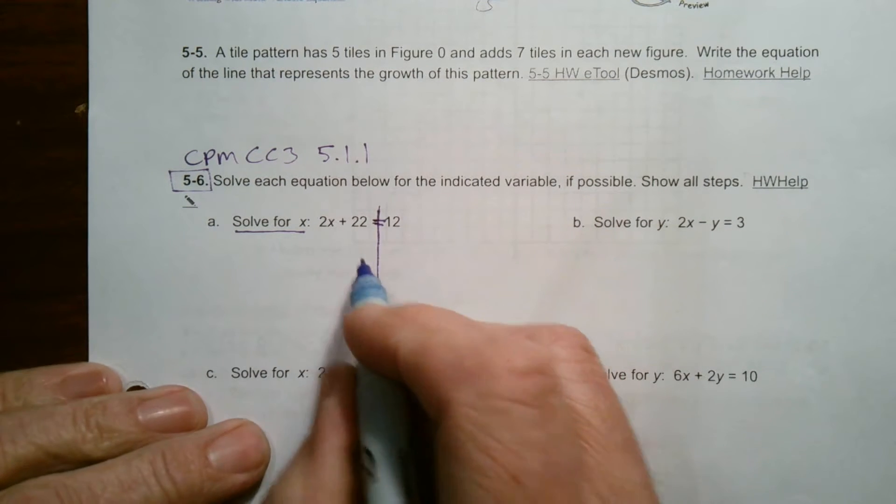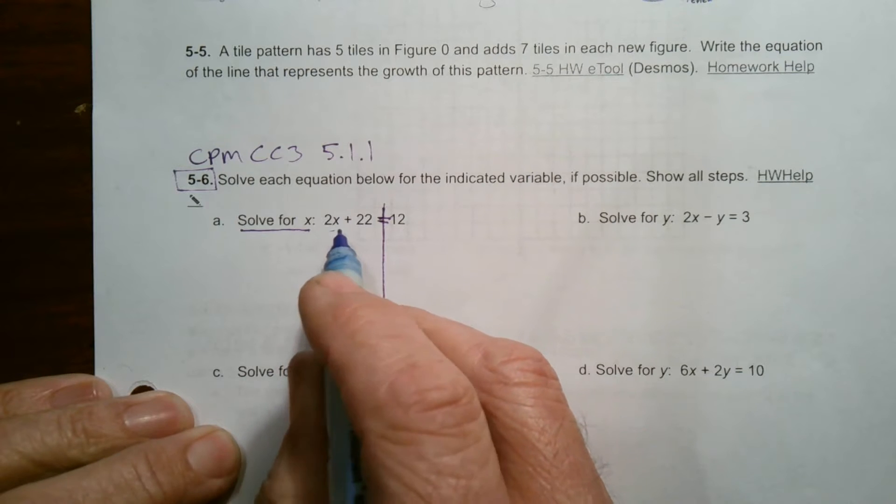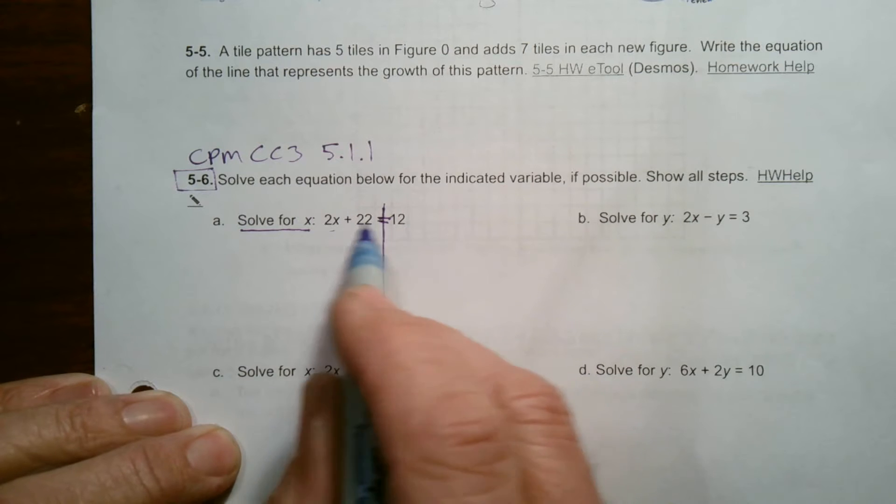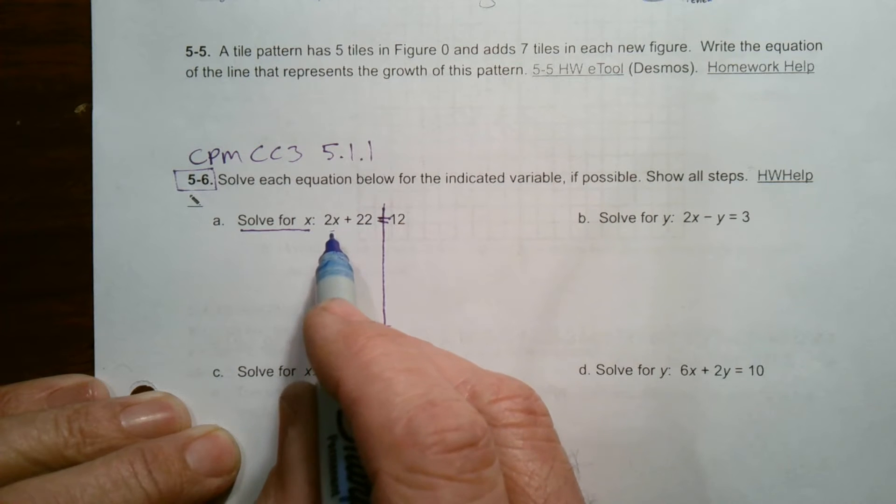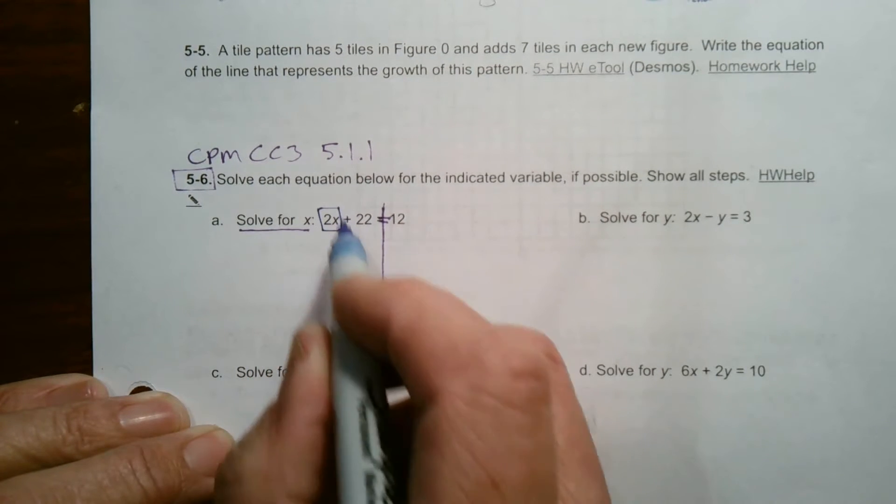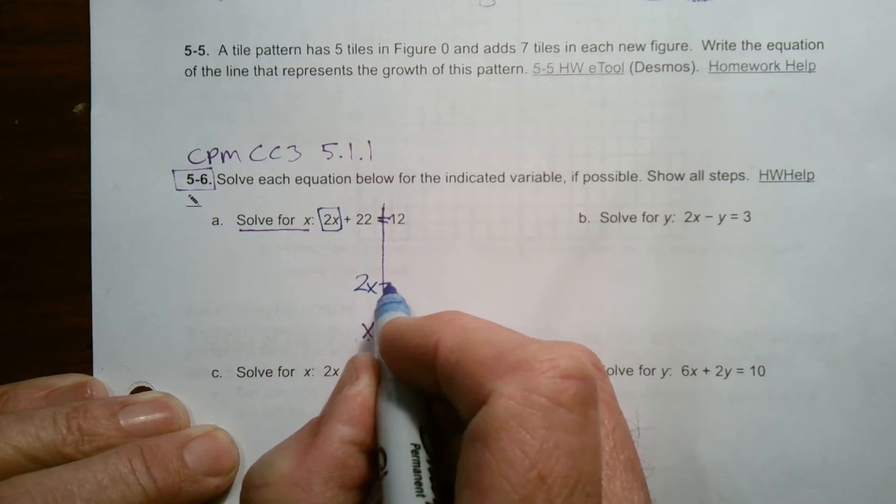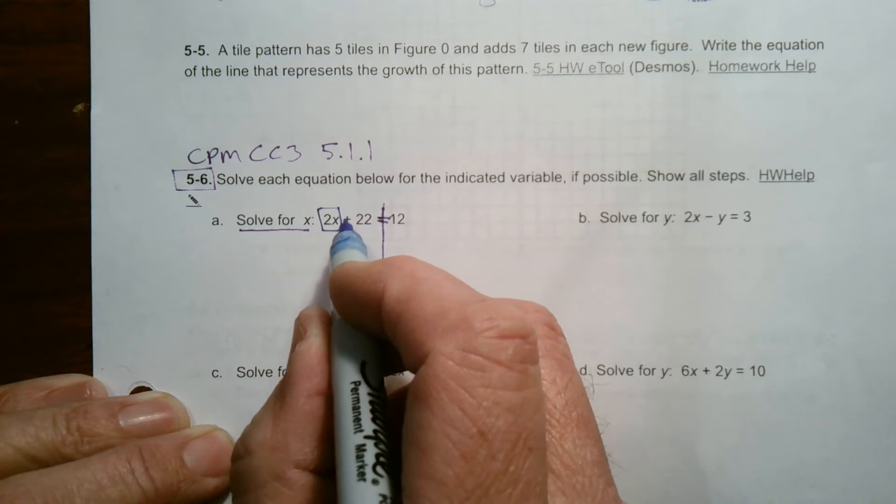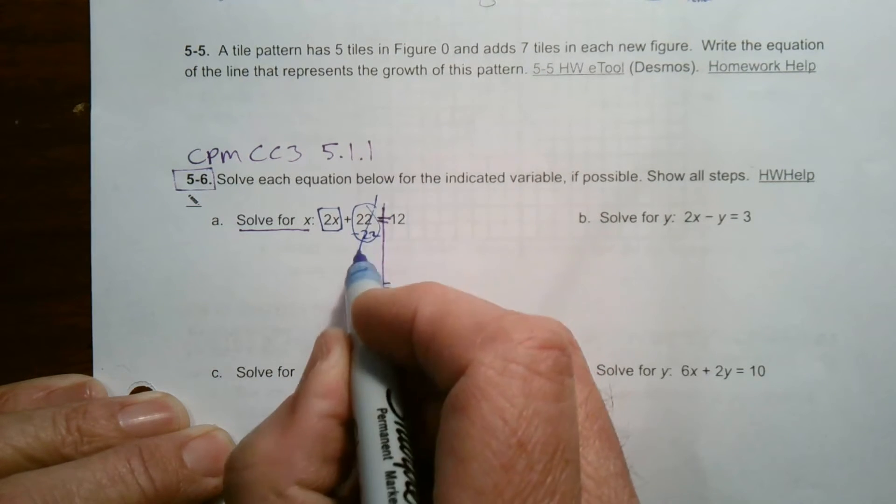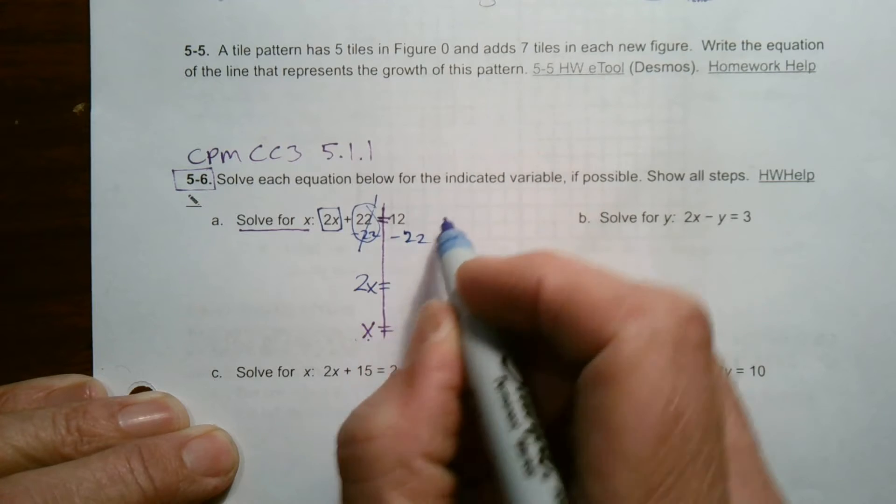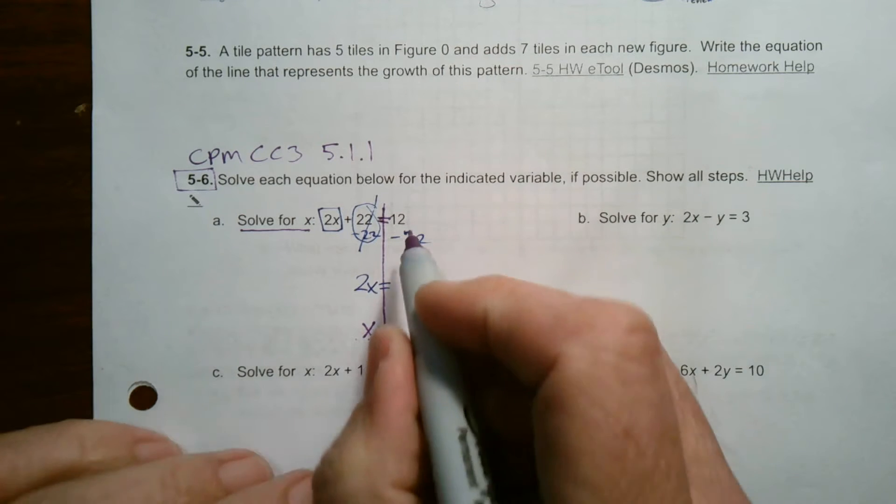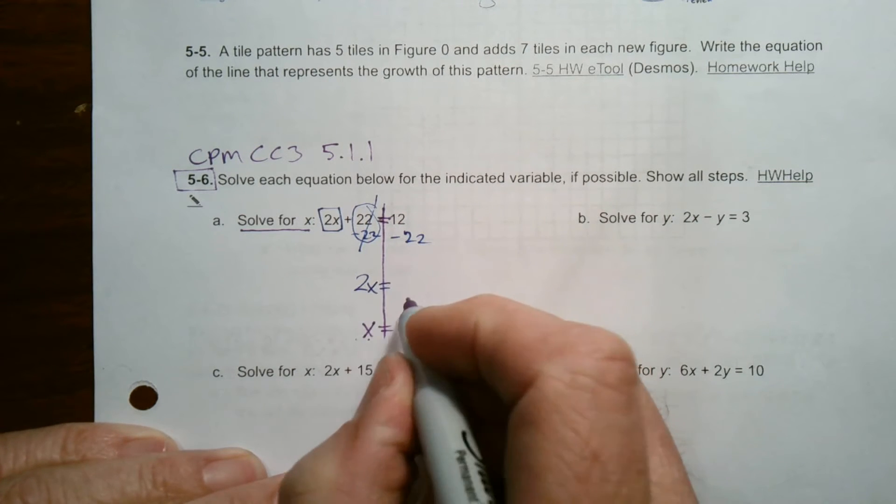But if not, we go through the process of solving our equation. Your first step is to simplify if possible, meaning distribute, combine like terms, but there's nothing to do there. Then you need to start isolating the variable term. My variable term is 2x. So I'm going to get that alone first. To do that, I've got to get rid of the plus 22. So I subtract 22. That makes that go away. And what you do to one side of the equation, that's why I've got this equation wall there, you balance it, you do the other.